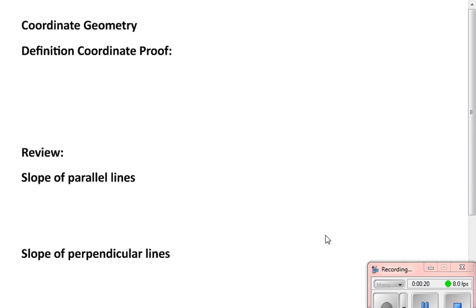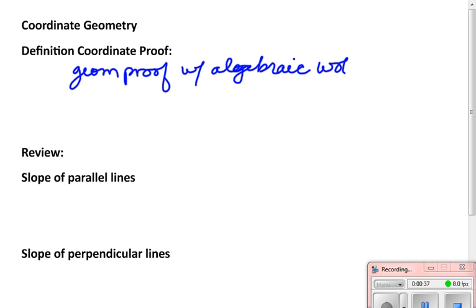There's another kind of proof called coordinate proofs and really what we're going to do is create a geometry proof with algebraic work as our logic. It's going to be the reason that we're proving something.